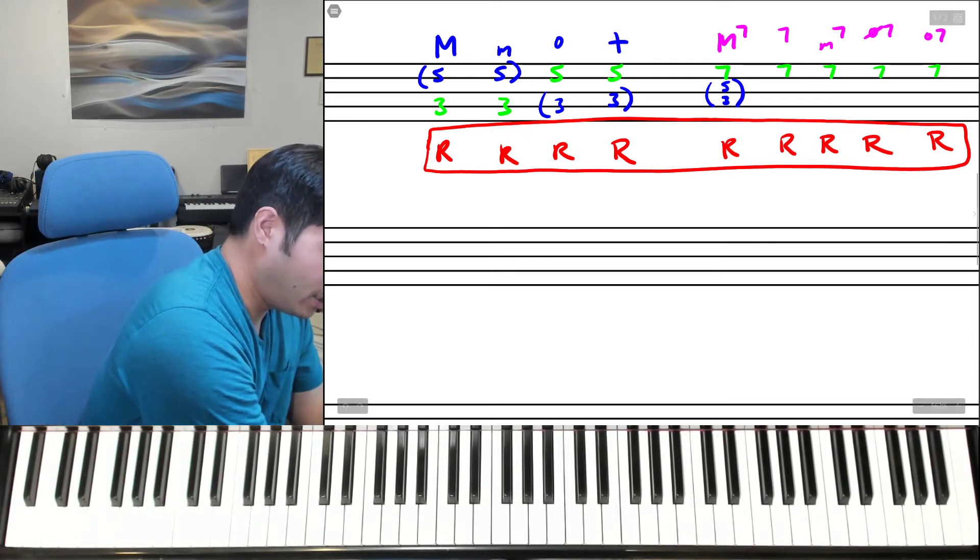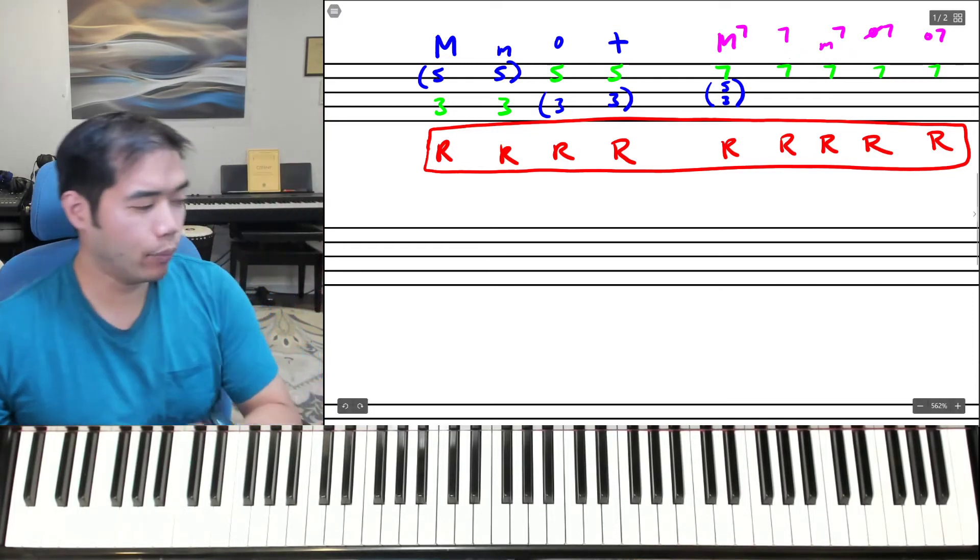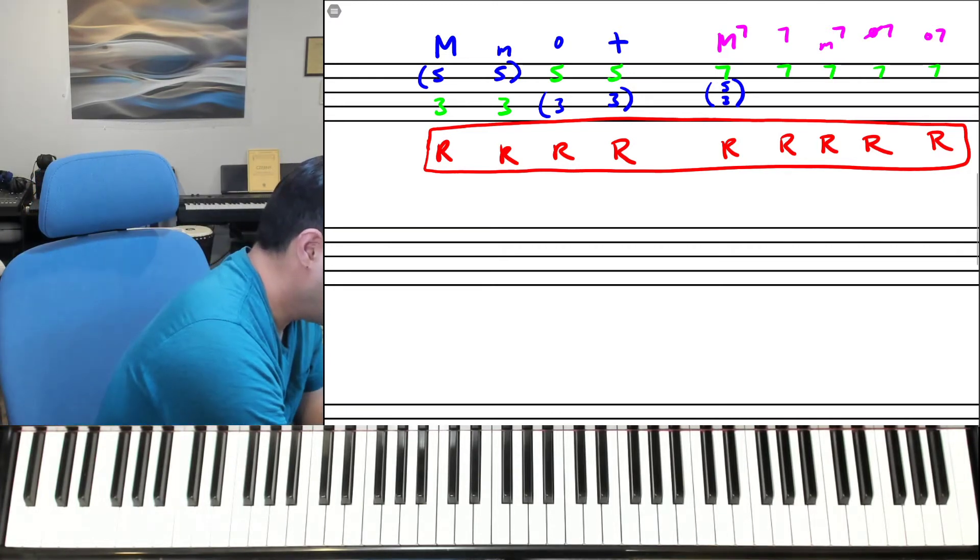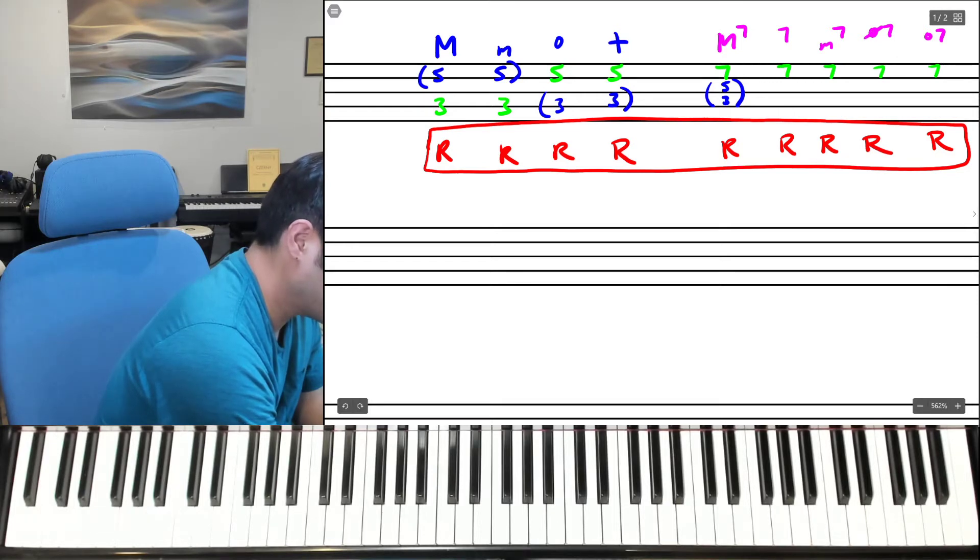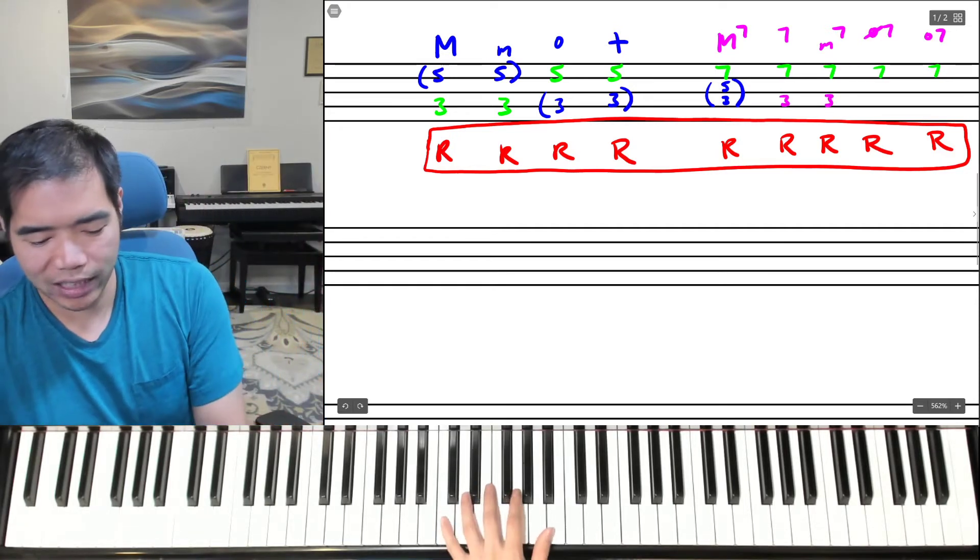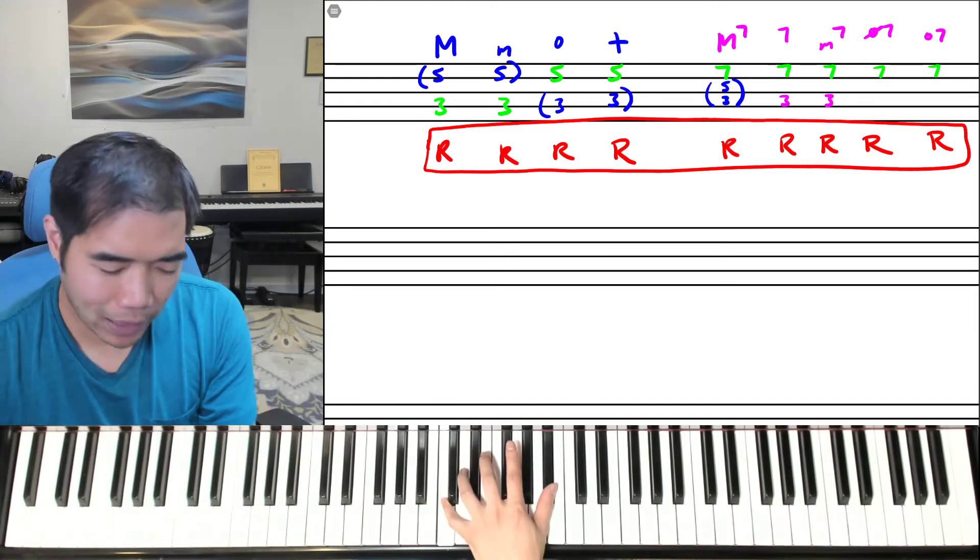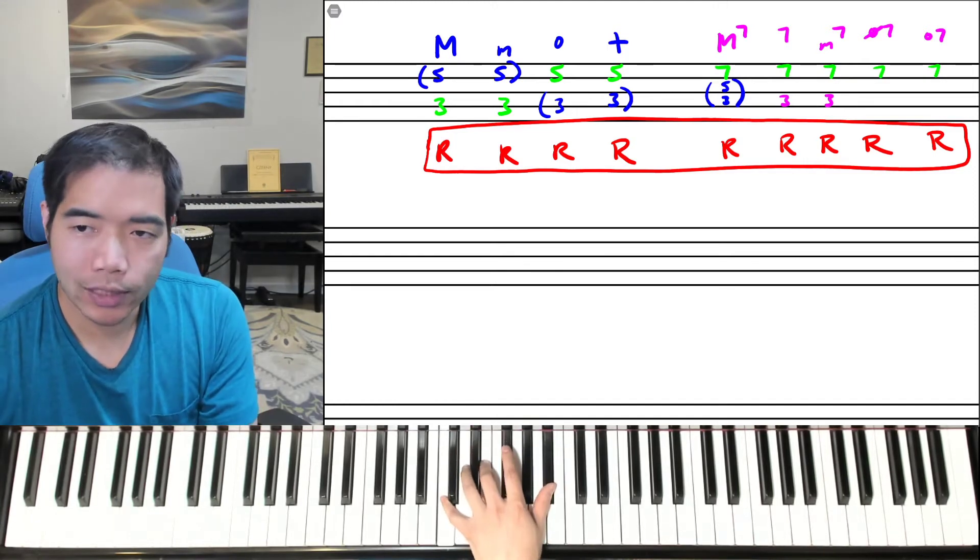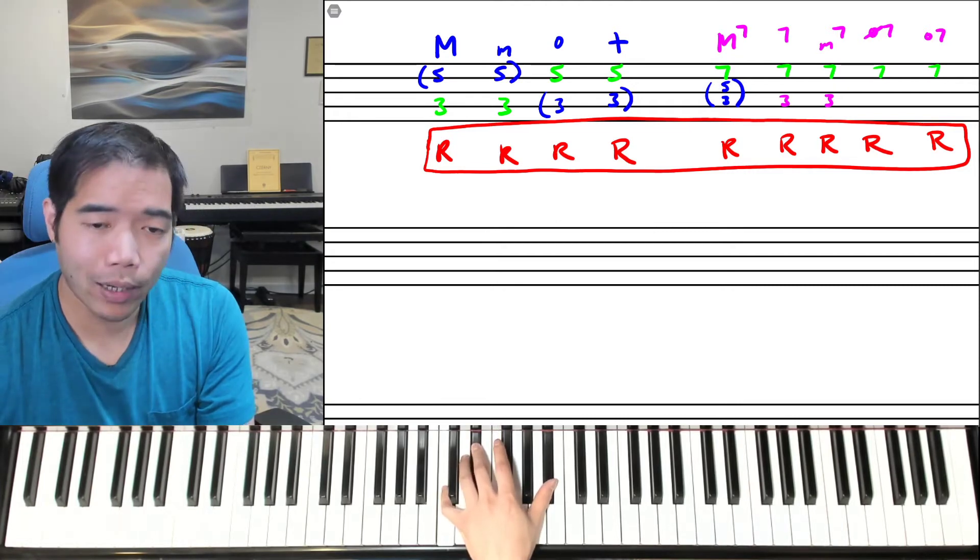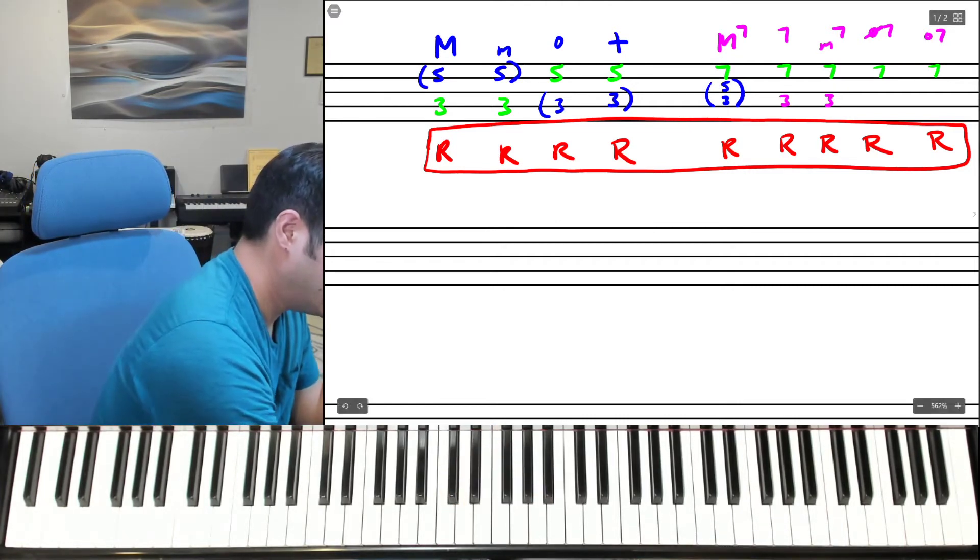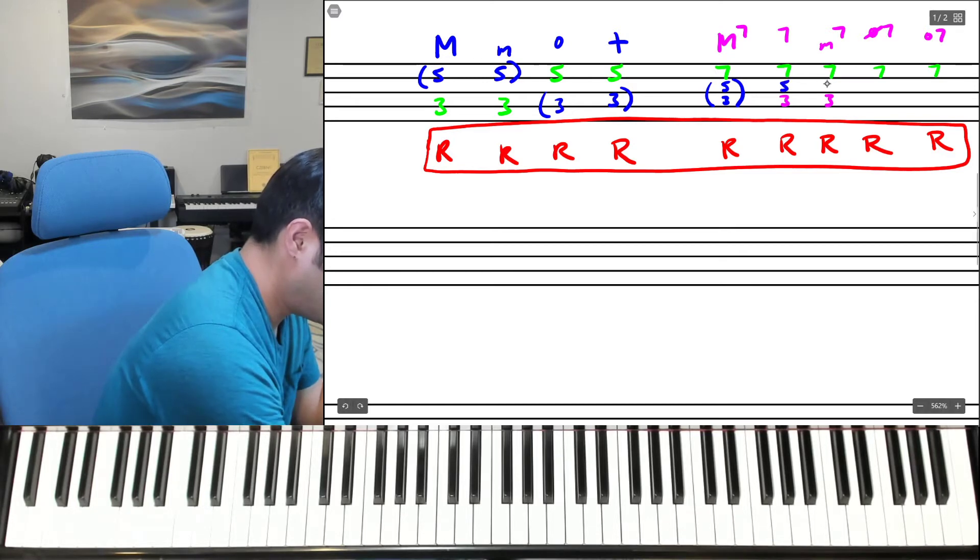For the dominant seventh and minor seventh, they both share a minor seventh. So what's the next most important note here? If you said third, you are correct. Because the third is going to tell us whether it's major or minor. For example, I have my root and my minor seventh. If I have a major third, now it sounds like a dominant seventh. If I have a minor third, it sounds like a minor seventh. So in this case, the fifth is optional.